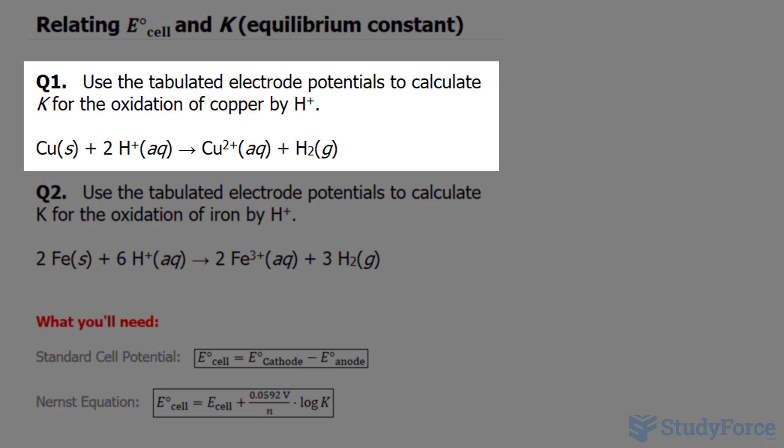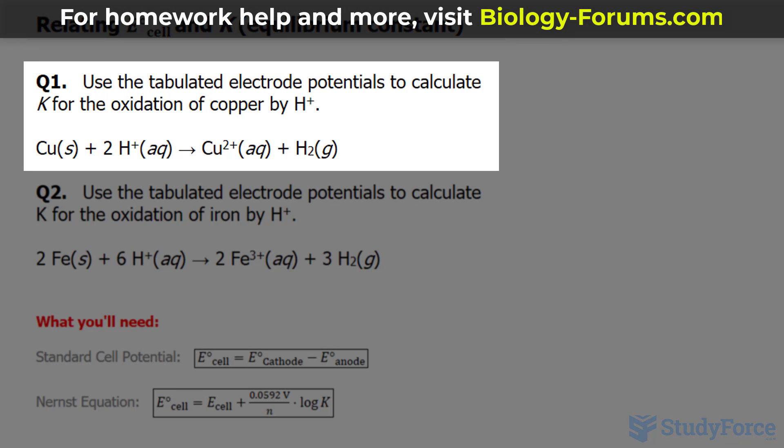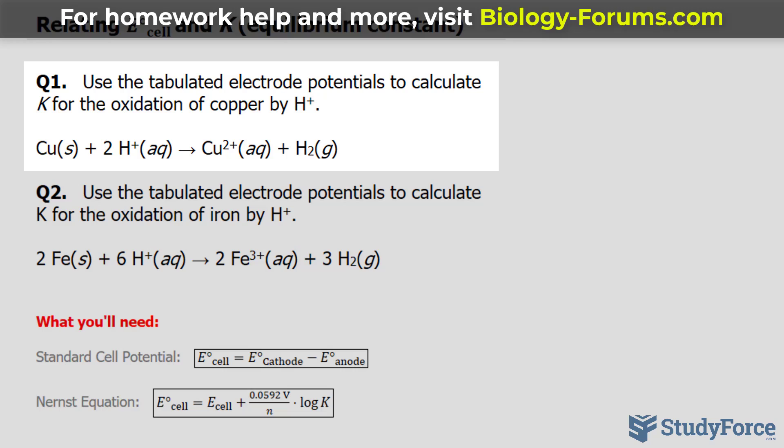The question reads: use the tabulated electrode potentials to calculate K for the oxidation of copper by H+. Before we start solving this,